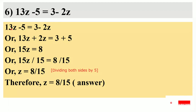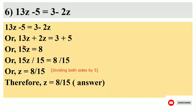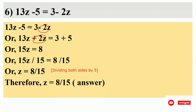We have 13z minus 5. If we combine 13z and minus 2z, we get 11z. And then minus 5 gives us the simplified expression, so we can solve for z.